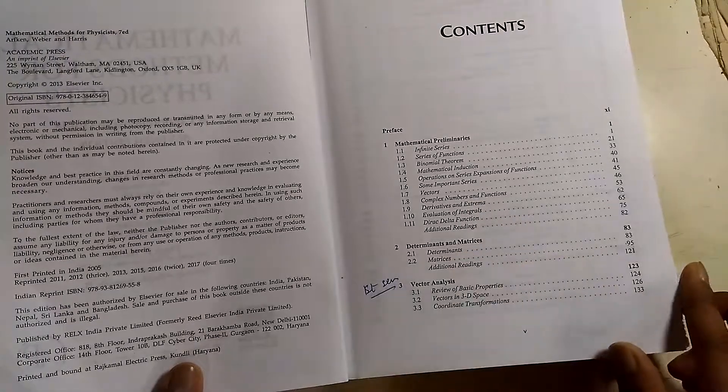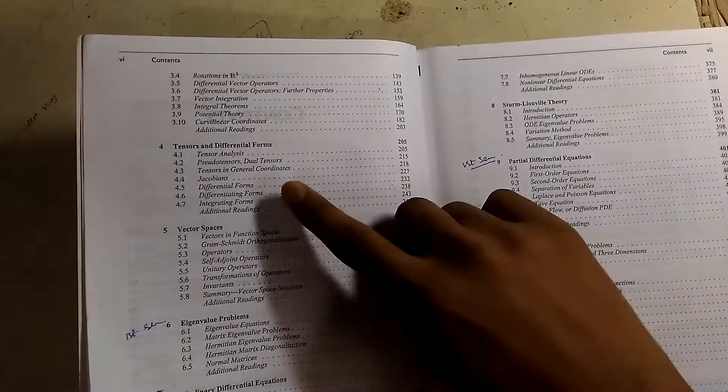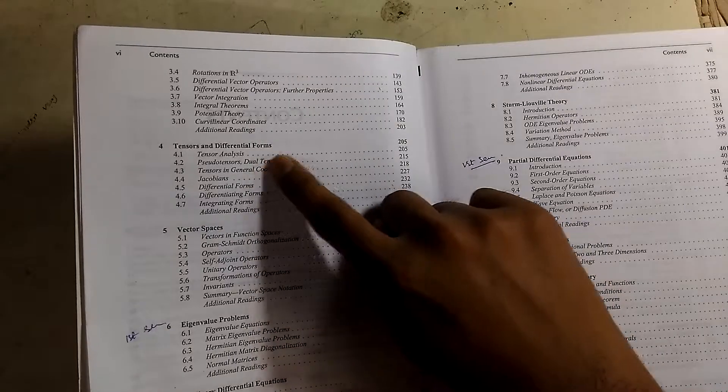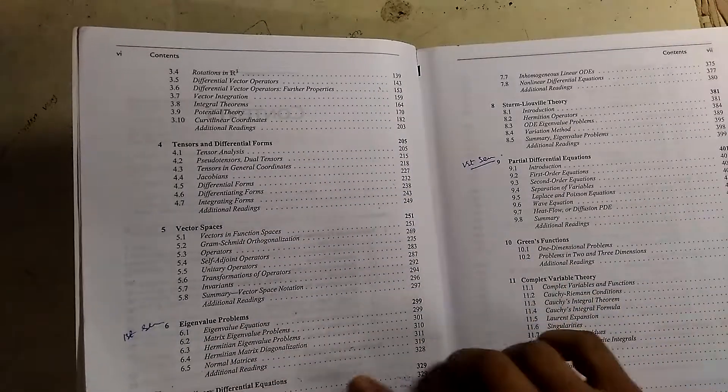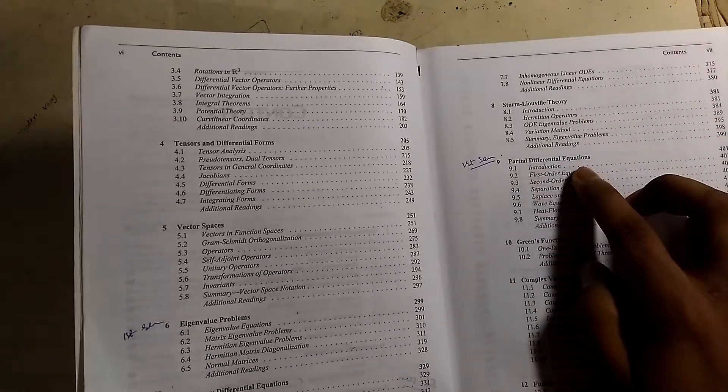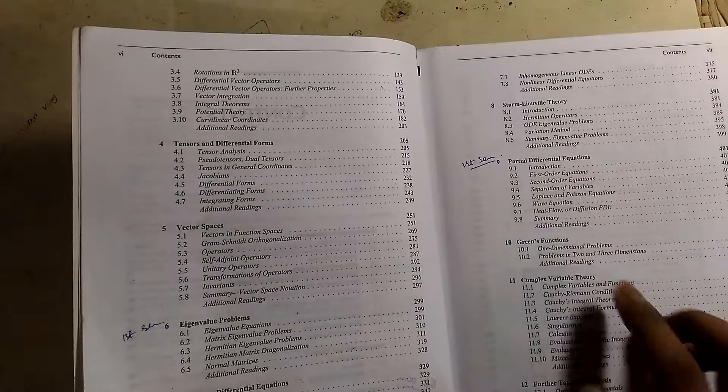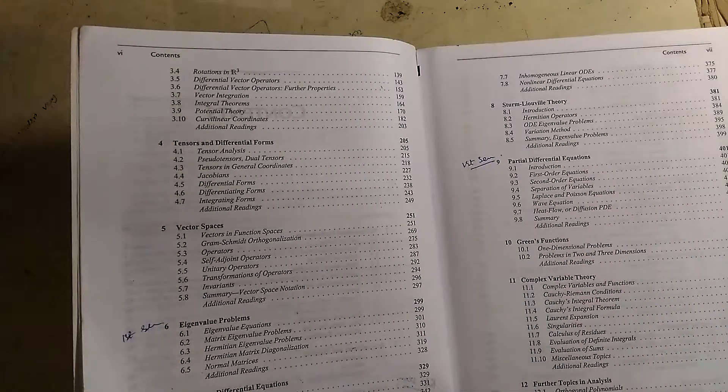The second chapter is determinants and matrices, then vector analysis, then tensors and differential forms, then vector spaces, then eigenvalue problems and ordinary differential equations, then Sturm-Liouville theory, then partial differential equations, then Green's functions, complex variable theory.